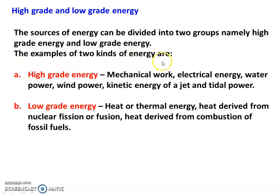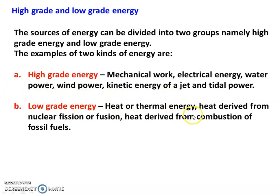Examples of the two kinds of energies: High-grade energy includes mechanical work, electrical energy, water power, wind power, kinetic energy of jet, and tidal power. Low-grade energy includes heat or thermal energy — heat derived from nuclear fusion or nuclear fission, and heat derived from combustion of fossil fuel.